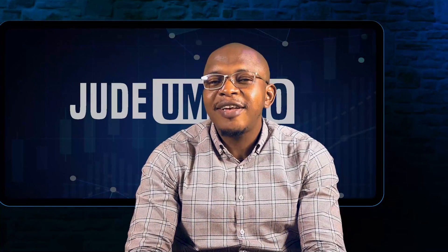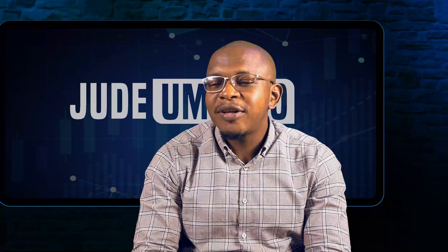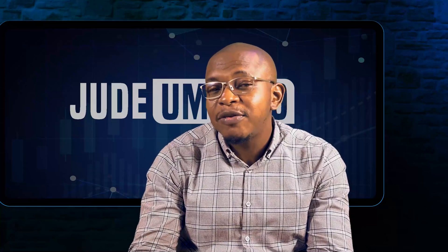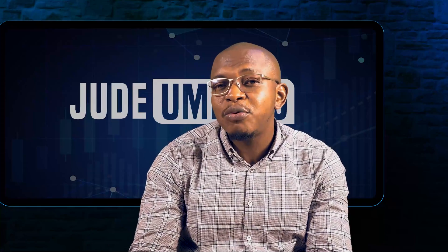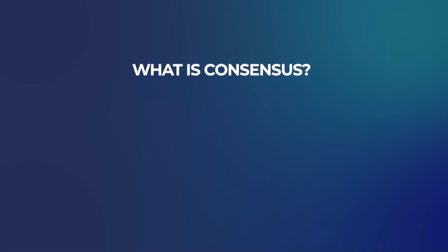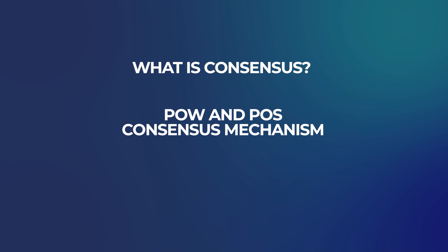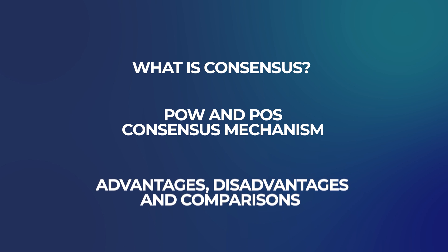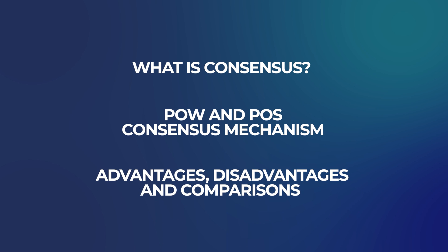In my first video on this layer series, I said that we have to understand the two biggest consensus mechanisms in the blockchain to proceed with the rest of the series. So we are going to look at what consensus is, the proof of work and the proof of stake consensus mechanisms, their advantages and disadvantages, and comparisons.